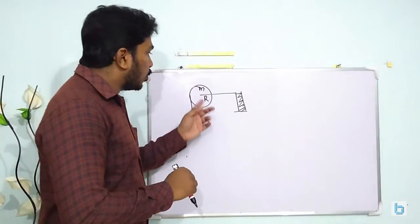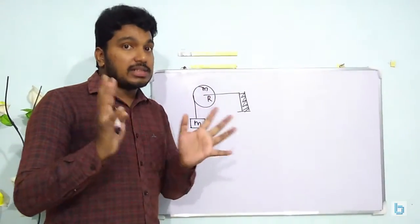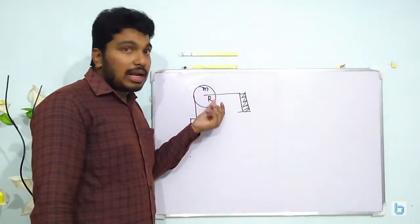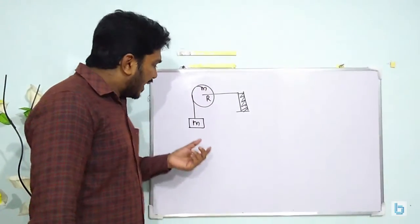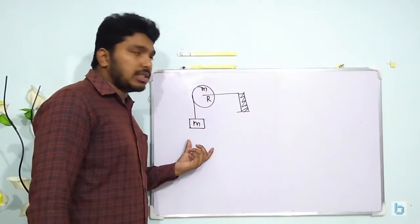Now in the question we are having a pulley and they are saying that the pulley is actually a disc of radius capital R and mass M. An equivalent mass M is hung from it.